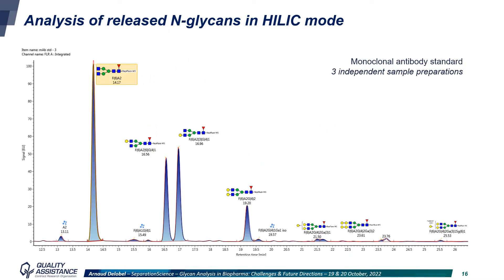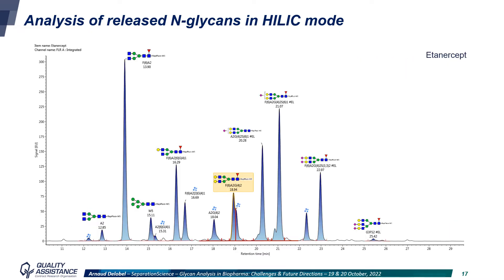Here are the fluorescence chromatograms obtained for three independent preparations of a monoclonal antibody using HILIC separation mode. The identifications were automatically given by the processing software, and as you can see, the analysis is highly reproducible as the three chromatograms are perfectly overlaid. The ratio of each glycan is calculated based on the relative areas of the different peaks. Here we also have the chromatogram of a more complex sample, etanercept, which is a fusion protein with more complex N-glycosylation, and once again glycans are identified unambiguously and automatically.